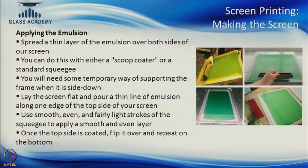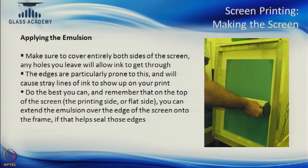First you have to apply the emulsion — spread a thin layer on both sides of the screen. This can be done with a scoop coater and you can have automatic machines to do it. For smaller frames that may not be essential, but for larger frames where manual coating may not be consistent, machines are important. You coat it and support it face-side down and pour a thin layer of emulsion on it. There are various kinds of emulsions available and the coating thickness is also specified according to the emulsion. The edges are prone to leave holes or gaps, and if you have any gaps in the emulsion the frame will be compromised — the emulsion has to be coated even on the edges.